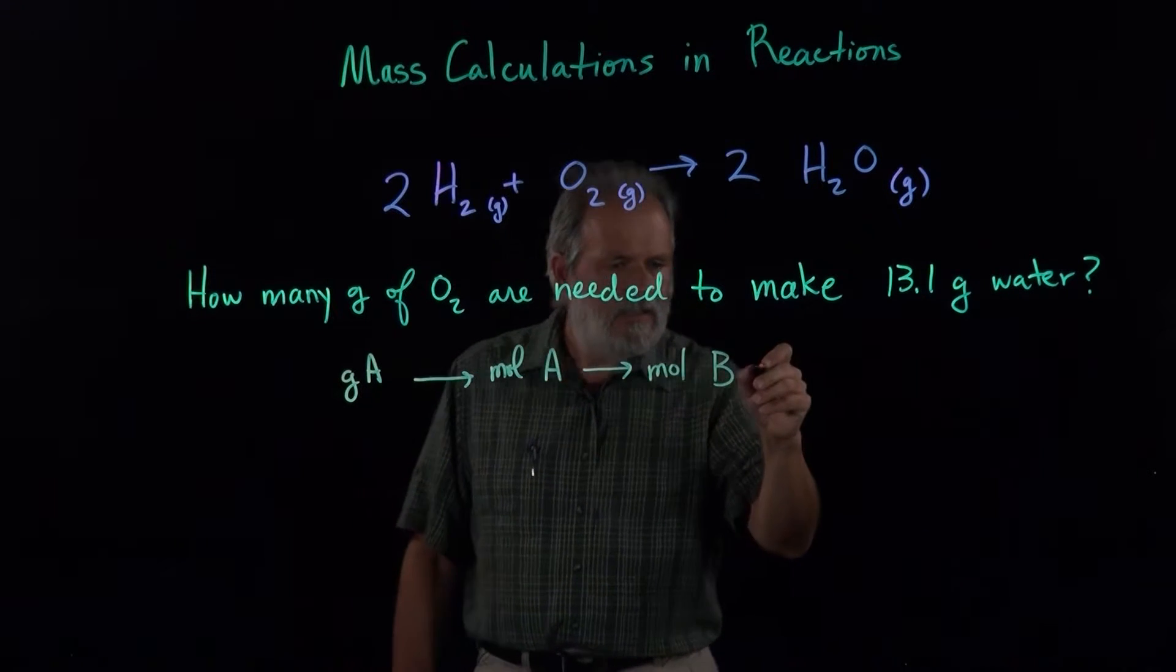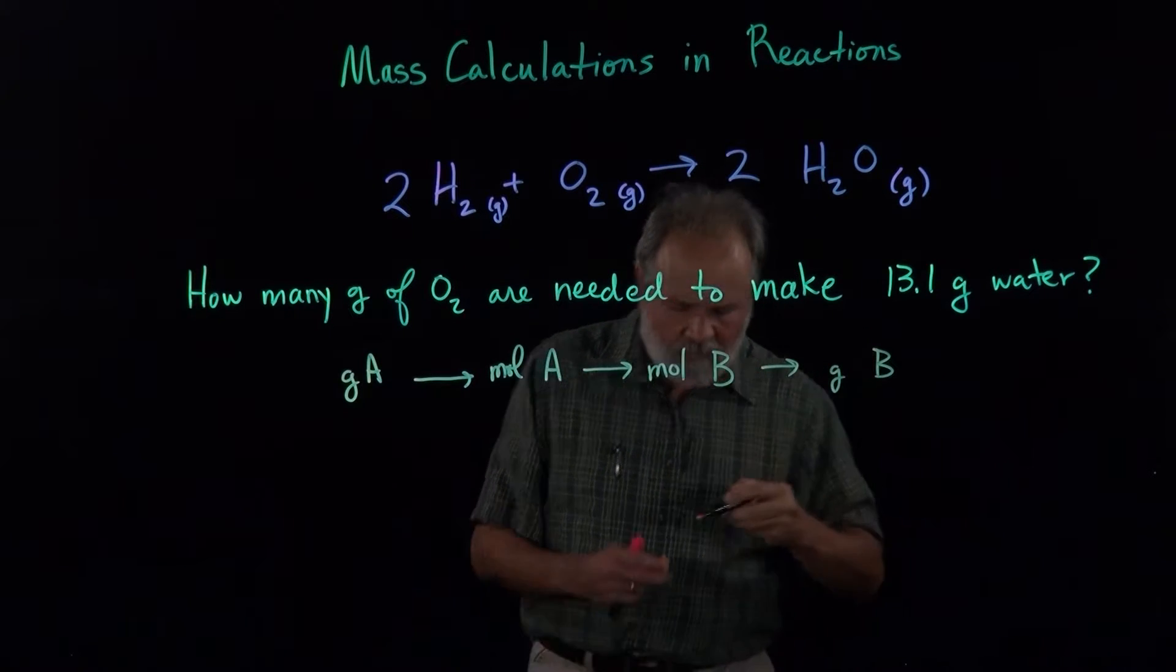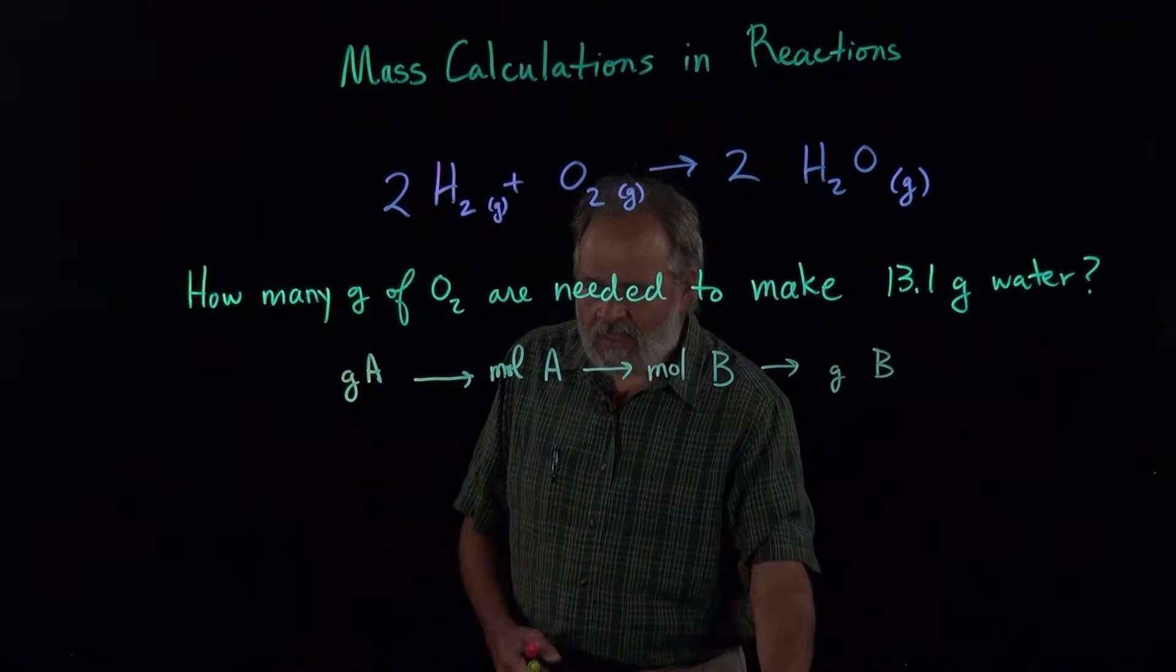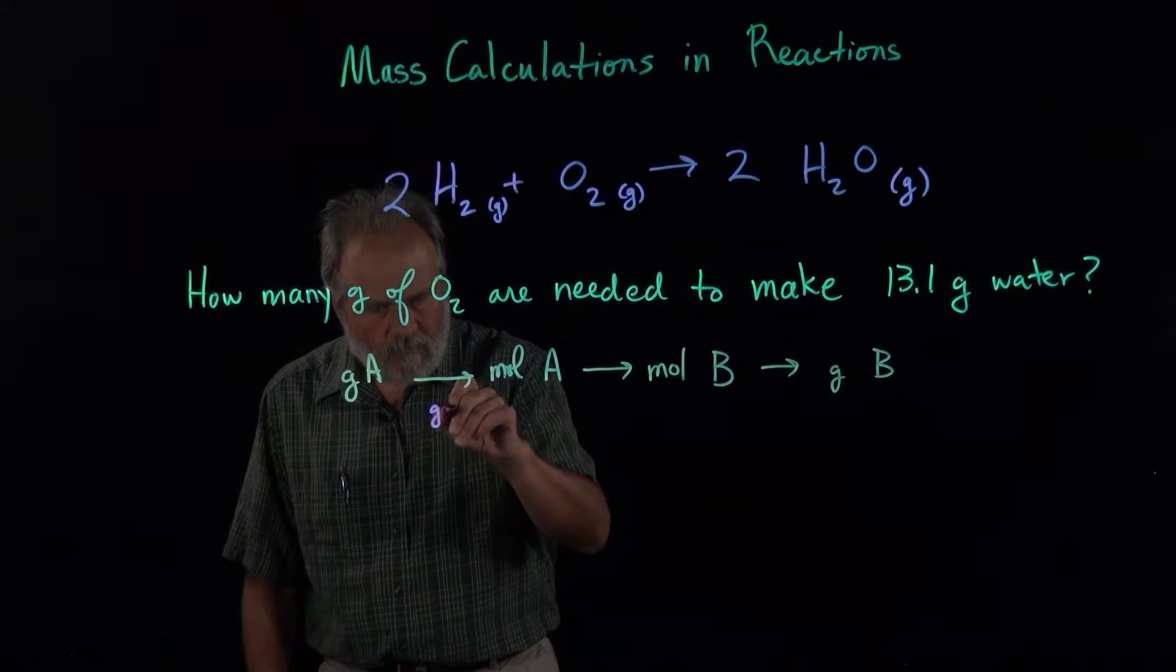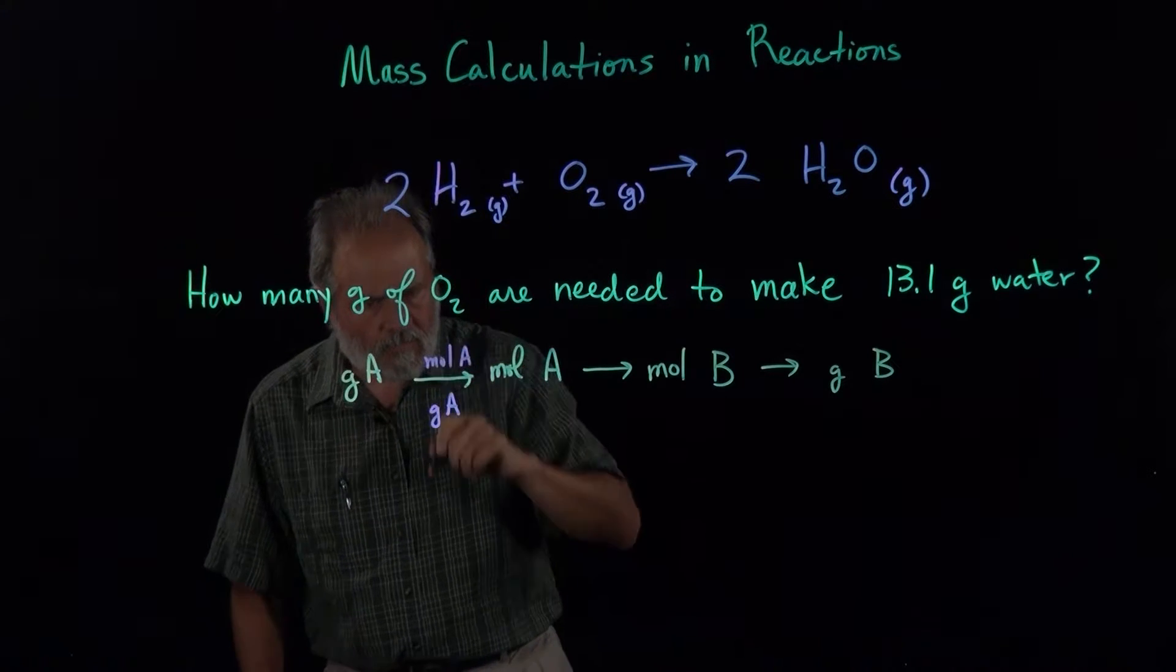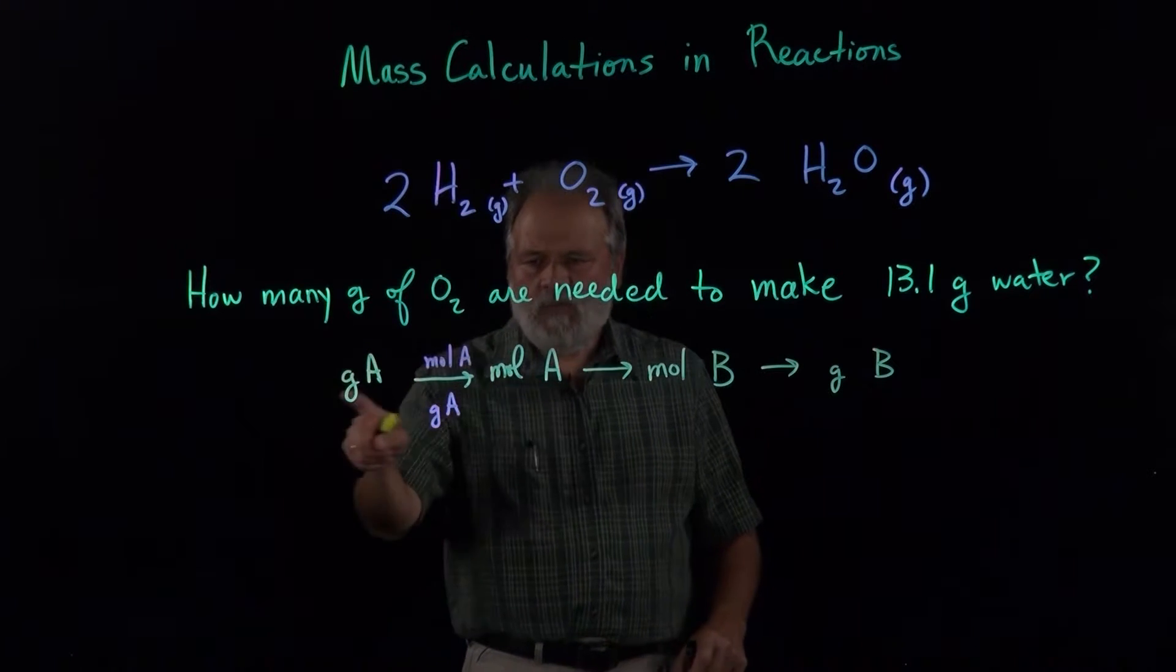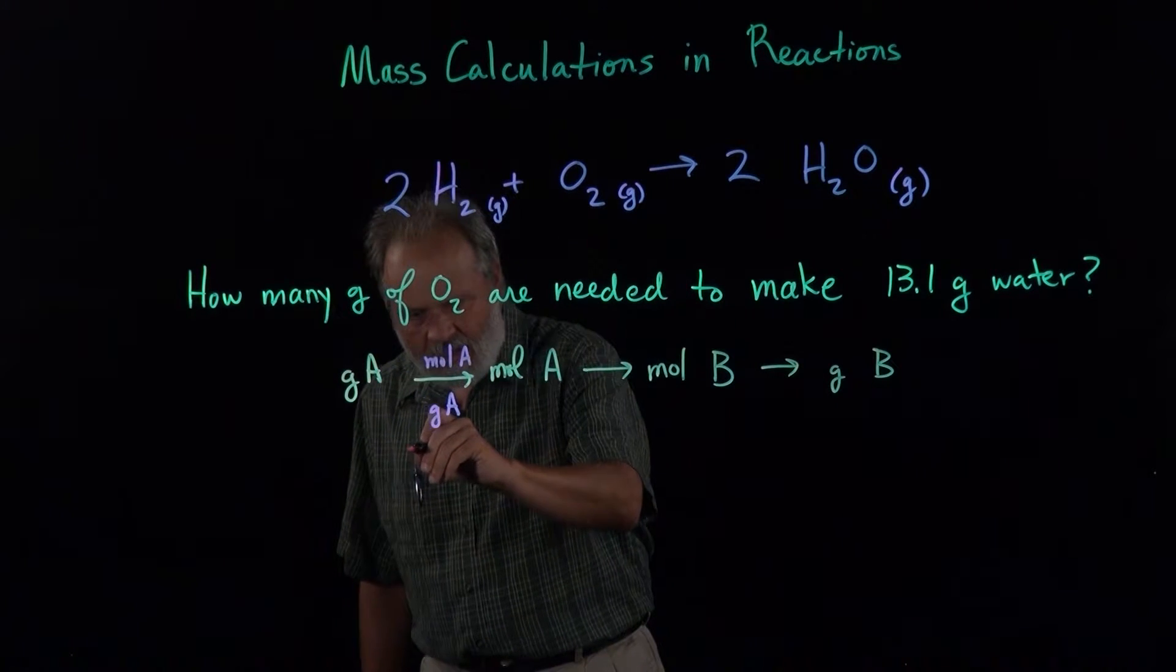And then finally, we convert back to grams of B using the molar mass of B. And so for the arrow, I'm just going to put in the conversion factor. So when we use this conversion factor, grams of A is going to cancel. We'll get moles of A. This is the molar mass of A.